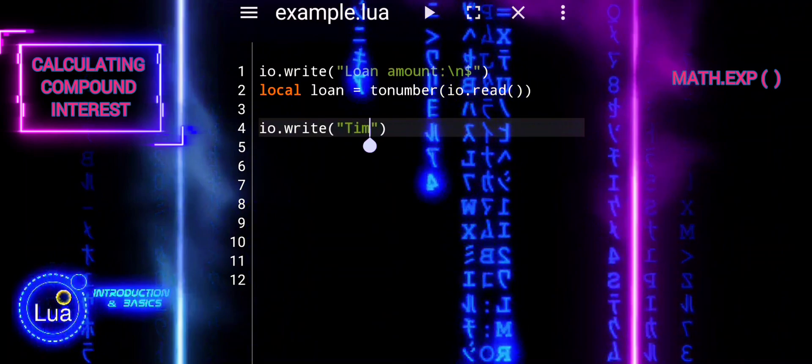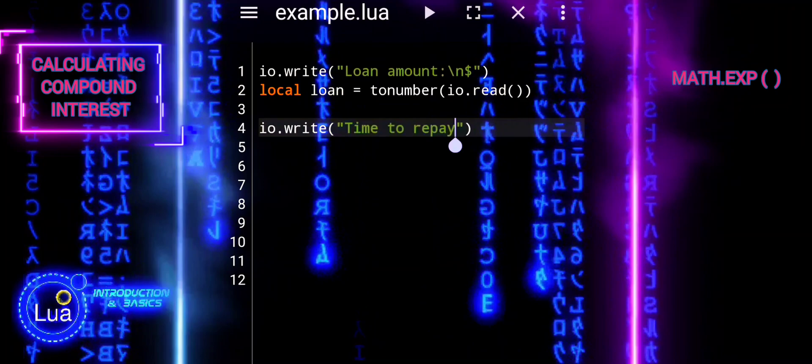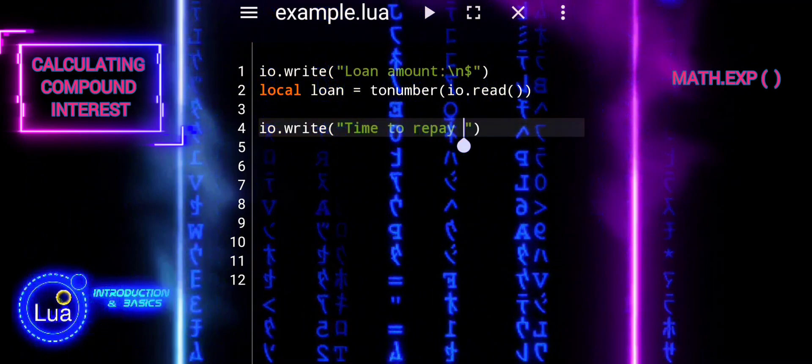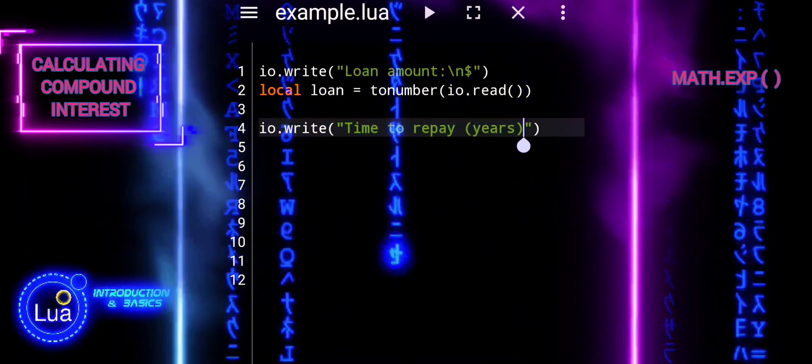In the next code segment, the program prompts the user to input the duration to repay the loan, measured in years. The entered value is then converted from a string to a numeric format using the tonumber function for further processing.